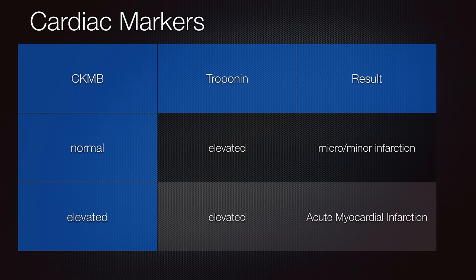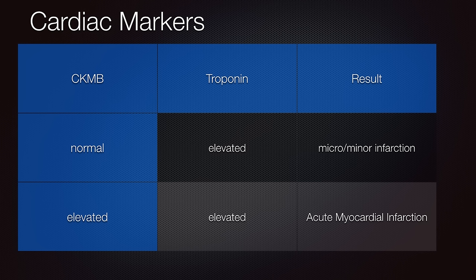The cardiac markers that are specific and sensitive for cardiac tissue include the CKMB and the troponin levels. If you order a CKMB and a troponin level and the CKMB is normal yet the troponin level is elevated, what you might have is a micro or minor infarction. But if both the CKMB and troponin are elevated, then you should be highly suspicious that the patient is having an acute myocardial infarction.